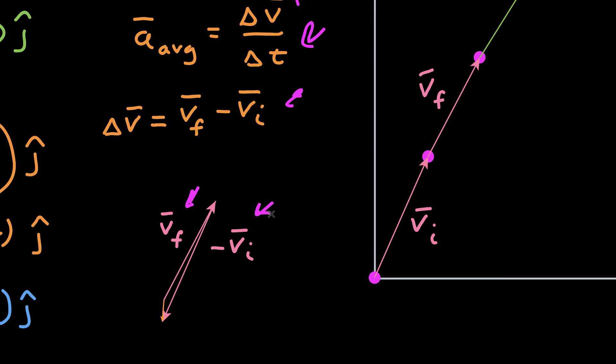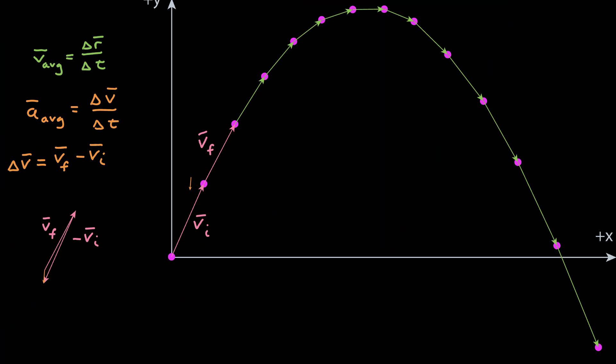and now I'm adding them graphically using the tail-to-tip method. The resulting vector is the average acceleration, which is given by that orange vector. I've gone ahead and put a copy of that acceleration vector to point that that's the average acceleration between those two velocity vectors.